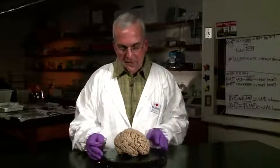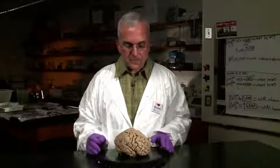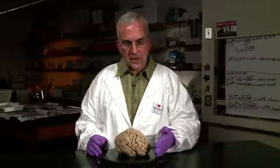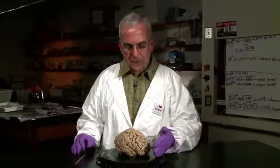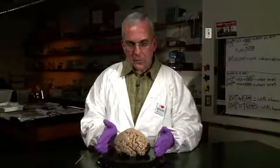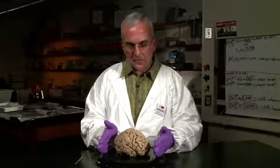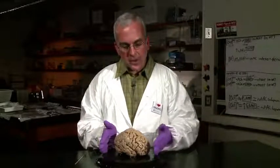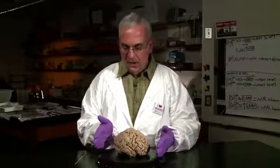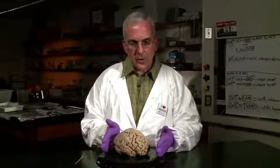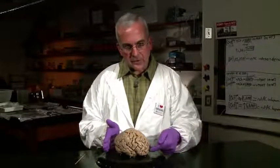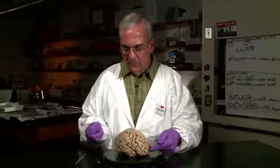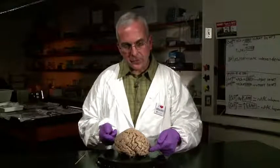Here we have an adult human brain, and the front of the brain is here to my left, and the back of the brain is here to my right. So the front part of the brain we call the anterior end, and the back part we call the posterior end. Anterior is towards the front of the brain, posterior is towards the back.